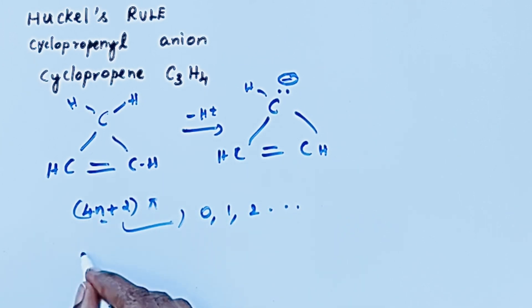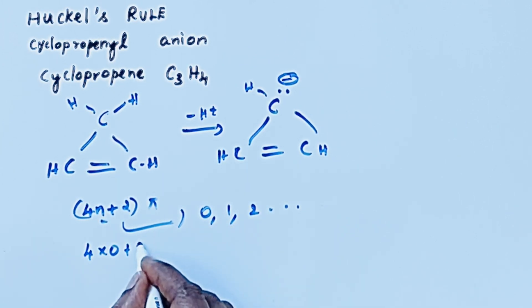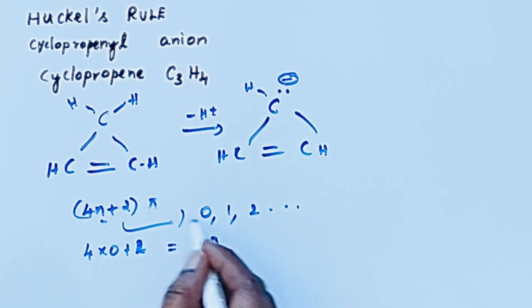Suppose if N is equal to 0, then 4 times 0 plus 2, then 2 pi electrons. If N is equal to 1, then 4N plus 2, then 6 pi electrons. In the same way if N is equal to 2 we will get 4 times 2, 8 plus 2, 10 pi electrons.